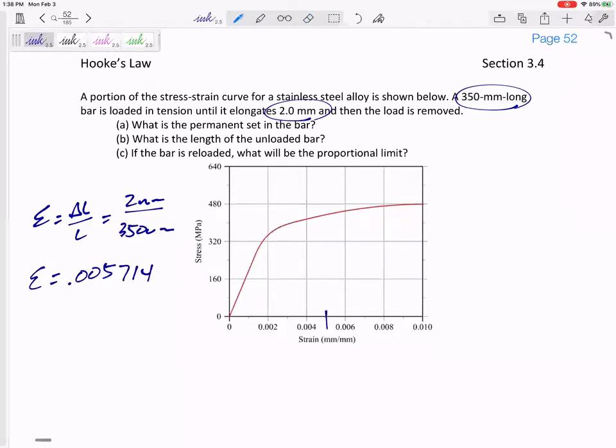So here's 0.005, here's 0.0055. So we're talking about right about here is 0.005714. So I'm gonna have to do some rough justice, and I'm gonna have to estimate this point right here.